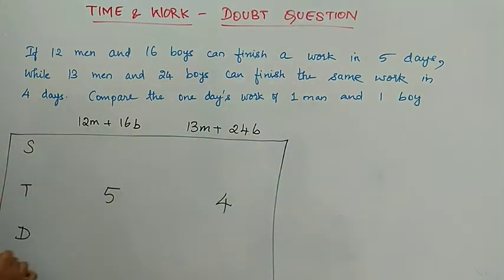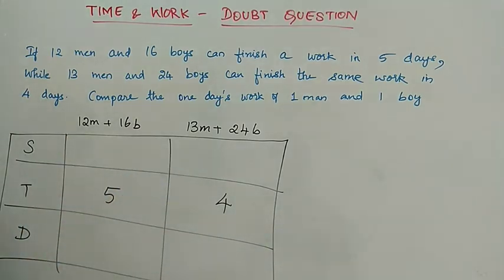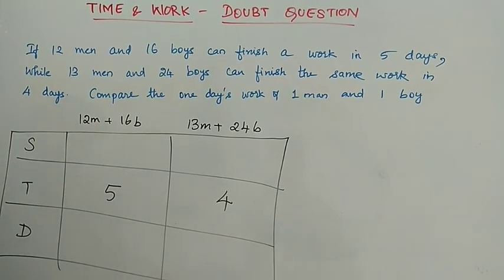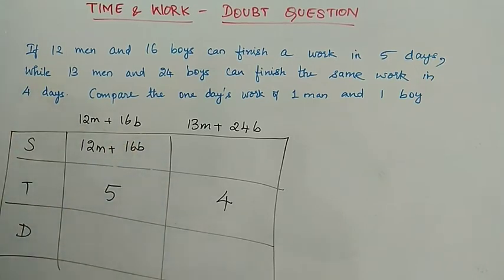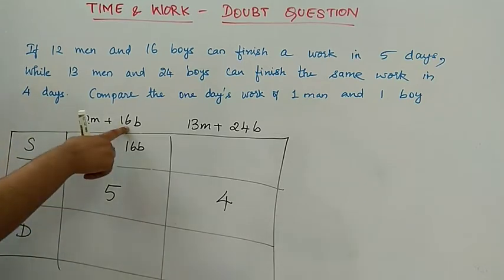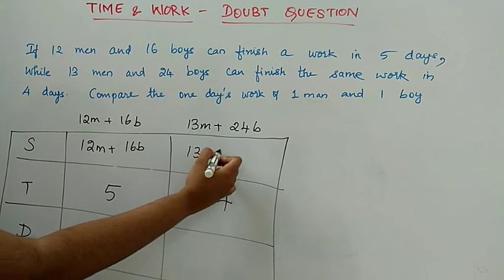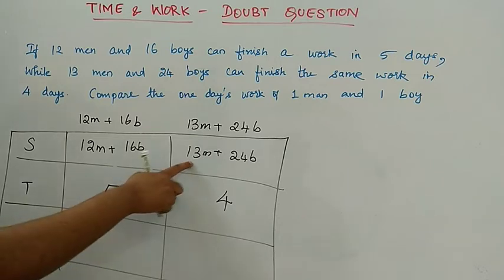We need a table. Speed of one man in 1 day is m. Boy's speed is b. Then, 12m plus 16b - one man would have speed m, one boy would have speed b. So 12m plus 16b, this is the combined speed. Then 13m plus 24b.